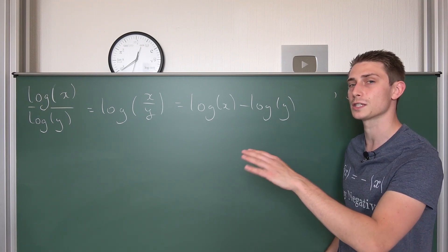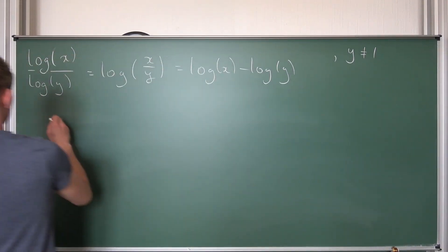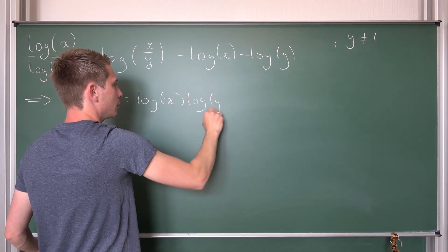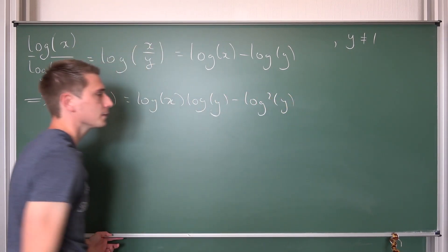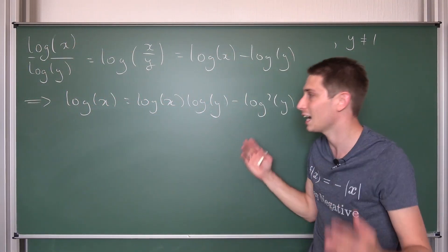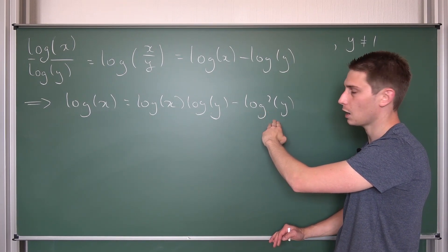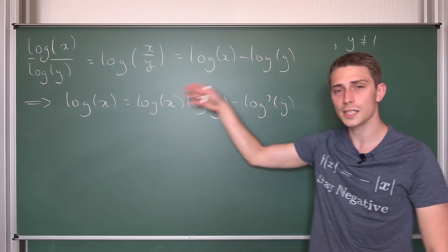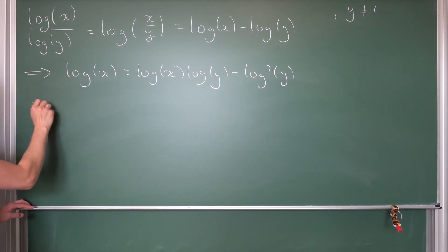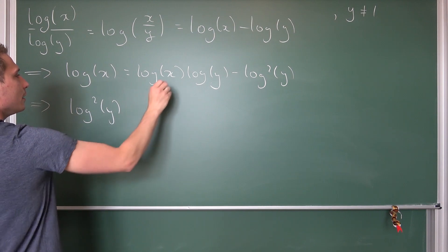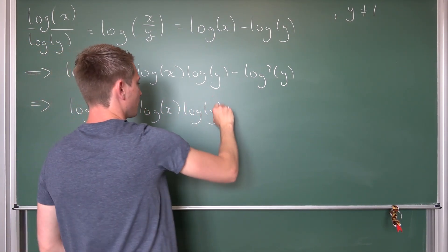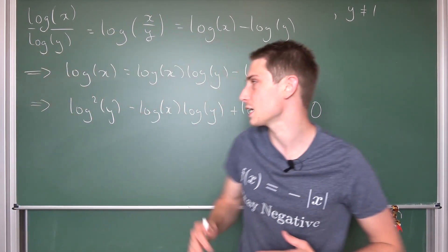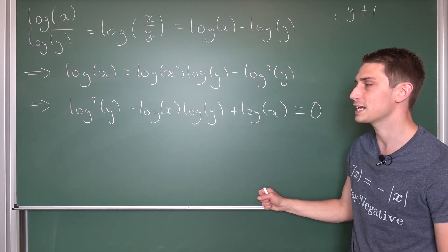Now with that out of the way, we need to talk about this a bit more. We are going to multiply both sides by the log of y, and we are going to get on the left-hand side: log of x equals log of x times log of y minus the logarithm squared of y. If we rename log of y as a, then this thing is quadratic in our log of y. This is negative a squared plus log of x times a being equal to log of x. Let us bring everything to one side: log squared of y minus log of x times log of y plus logarithm of x equals zero. Now give log of y a new name and you just have a simple quadratic equation that we can easily solve using the quadratic formula.